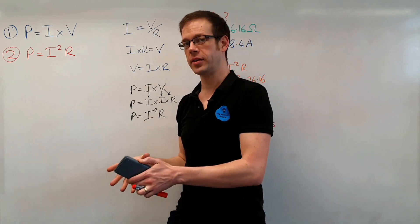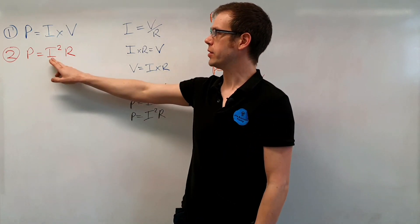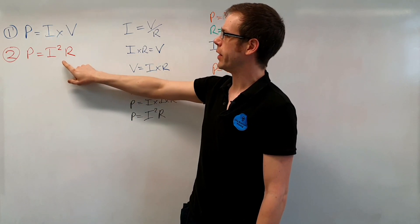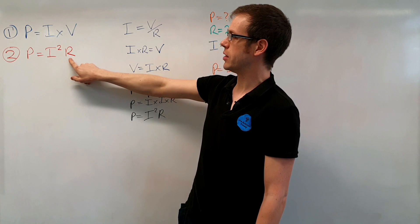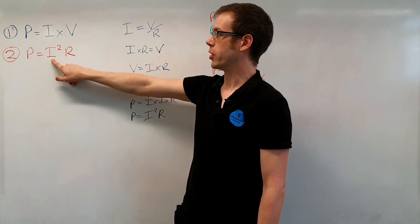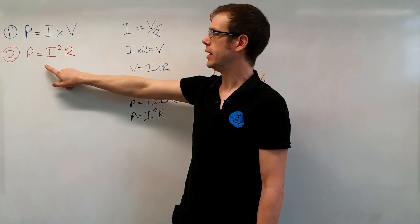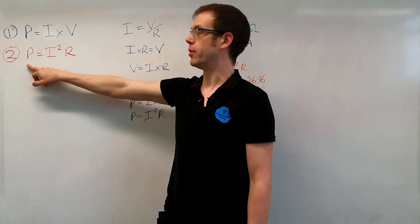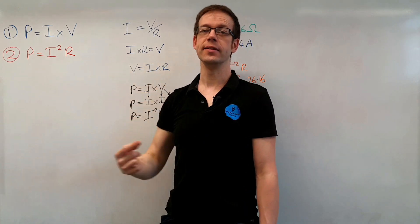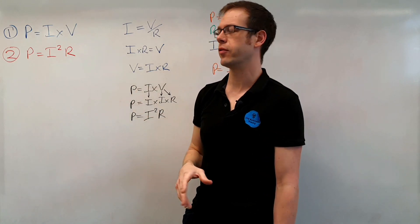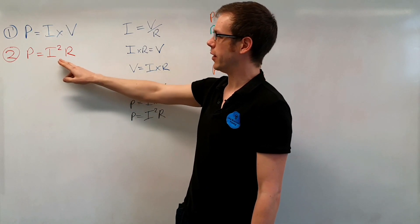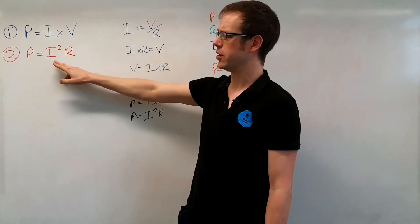Now we know that when you pass current through a transformer when you use a transformer it starts to get hot. Part of the reason for that is you've got current flowing through a resistance the resistance of the winding of the coil there. So if we take the resistance of the coil and times it by the current flowing through the coil squared it will actually tell you how much power is being lost by that transformer in the form of heat due to the copper winding. There are other reasons why transformers get hot and waste energy but this is the one that relies on the resistance of the copper.